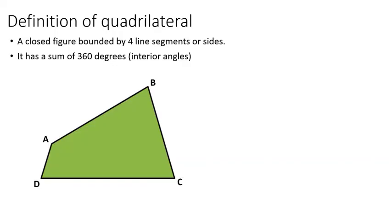When we say quadrilateral, the definition is it is a closed figure bounded by four line segments or sides. The keyword here in parallelogram is the four line segments or sides. So when the given shape, like this in our slide, when the given shape is a closed figure, so this is a closed figure.